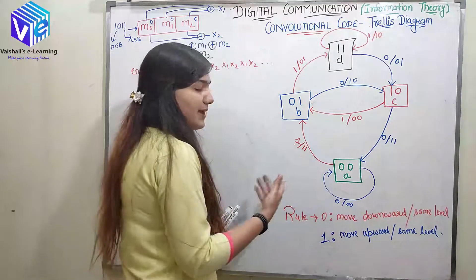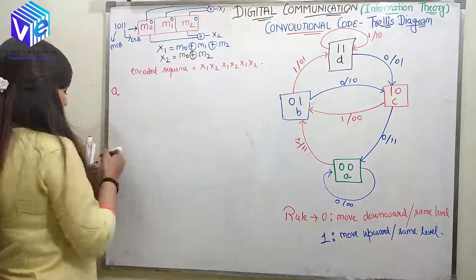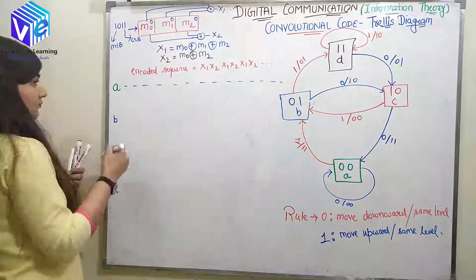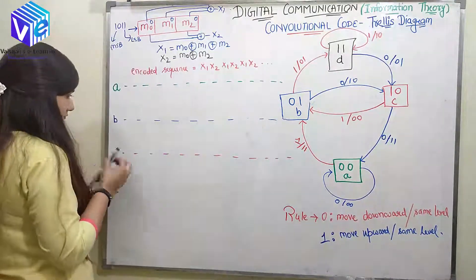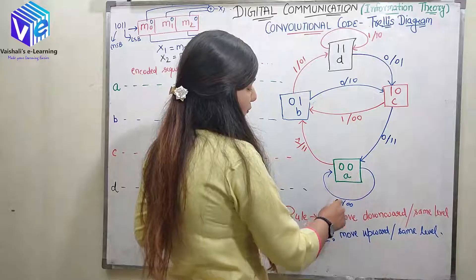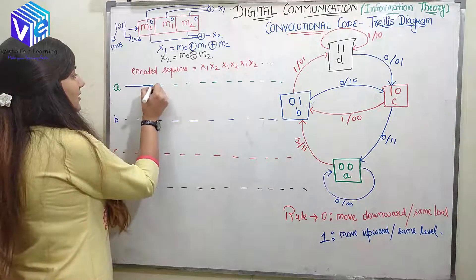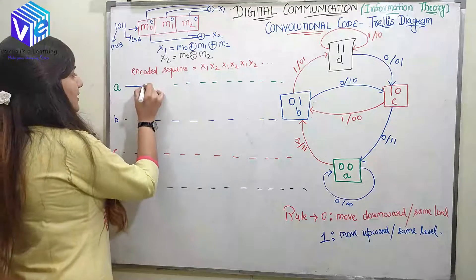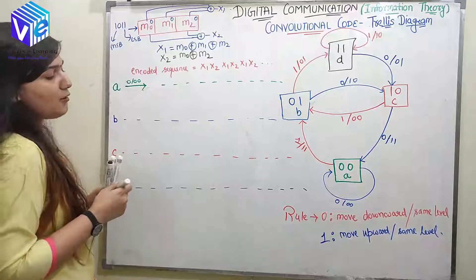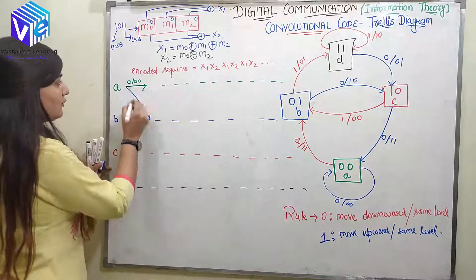Now we'll make the trellis diagram. We have four states. We started from state A. When the input was 0, it remained at state A, and the output was 00. Now when the input was 1, it goes to state B, and the output was 11.